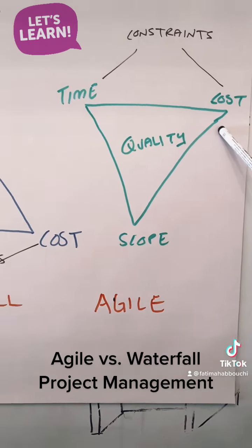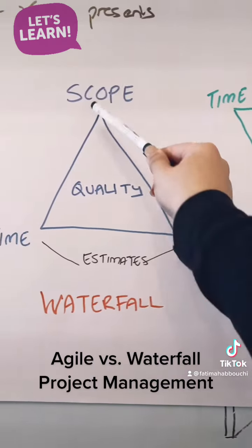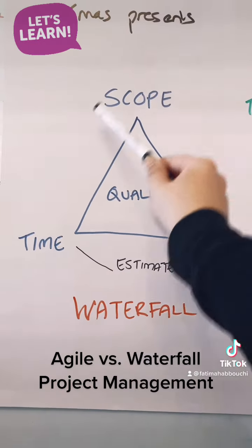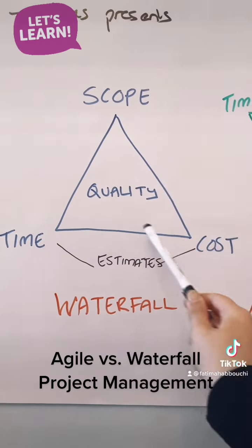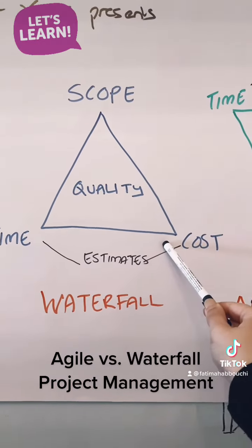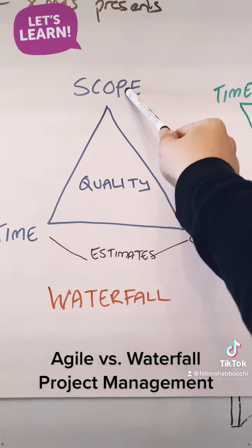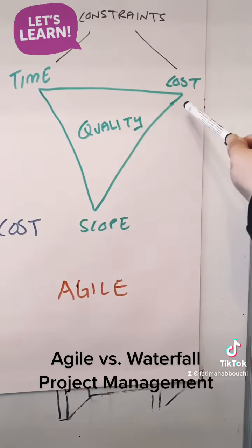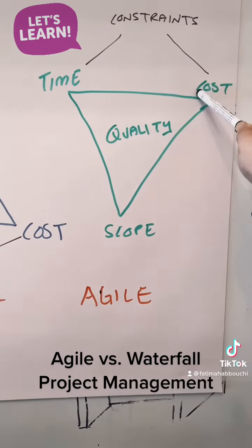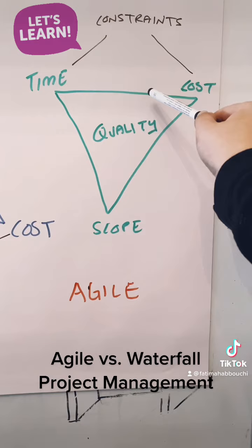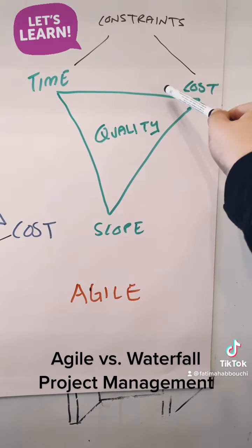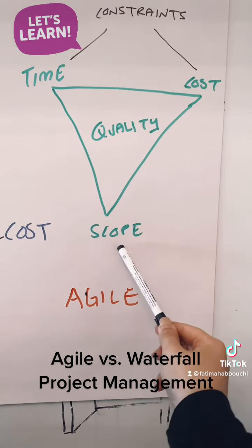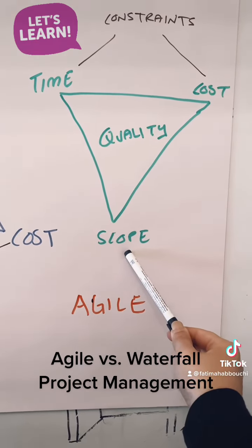In waterfall, our scope is fixed up front and we adjust time and cost throughout the project to meet said scope, whereas in agile our cost and our time is a constraint and becomes fixed, so we adjust our scope throughout the project.